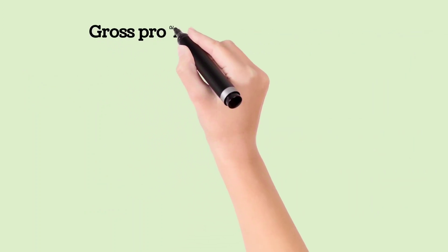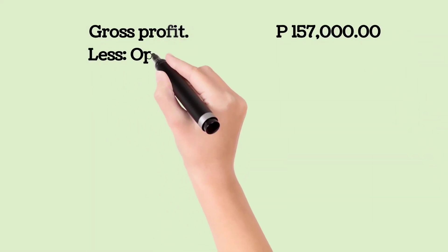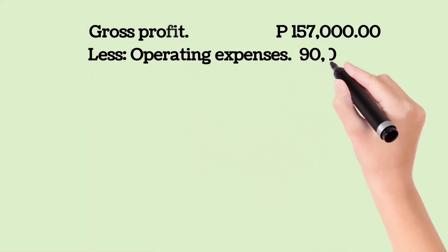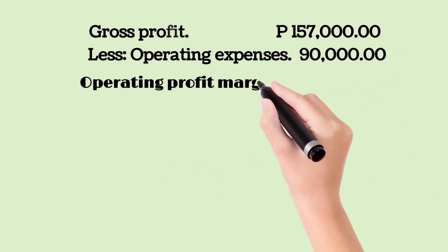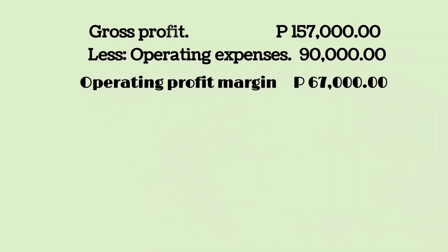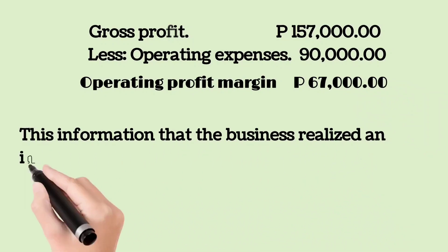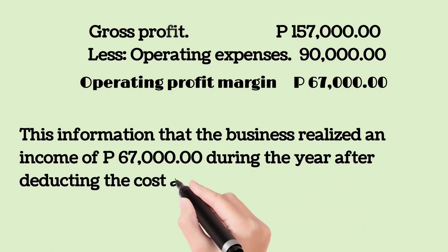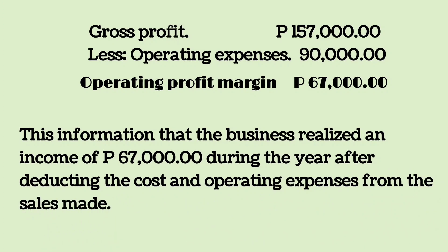Gross profit less operating expenses equals operating profit margin of $67,000. This shows that the business realized an income of $67,000 during the year after deducting the cost and operating expenses from the sales made.